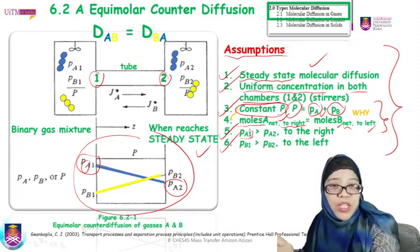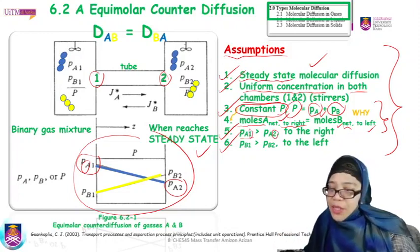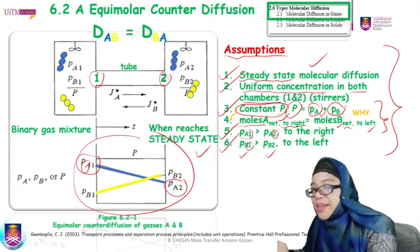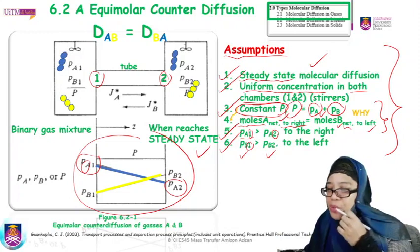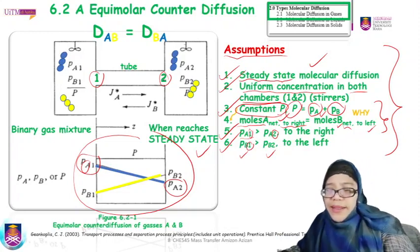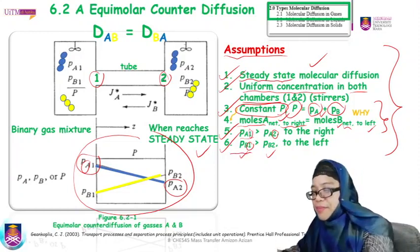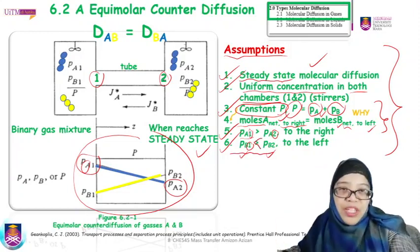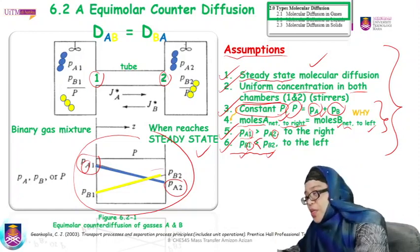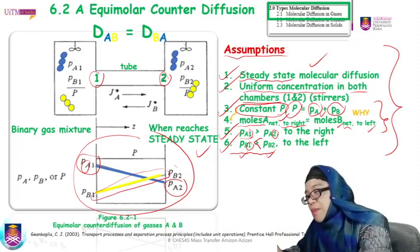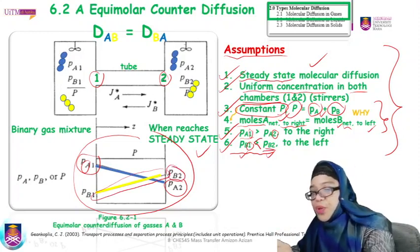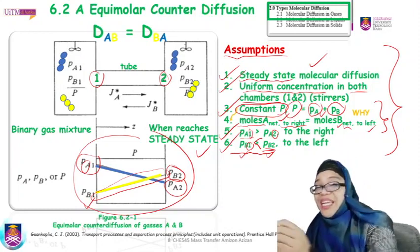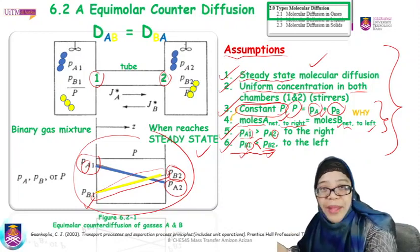I need to make a correction here. The partial pressure of B at location 1 is actually lower than the partial pressure of B at location 2. Looking at the plot, the partial pressure of B at location 2 is much higher than at location 1. Therefore, B will move from right to left — that is, from chamber 2 to chamber 1. Please note this correction.